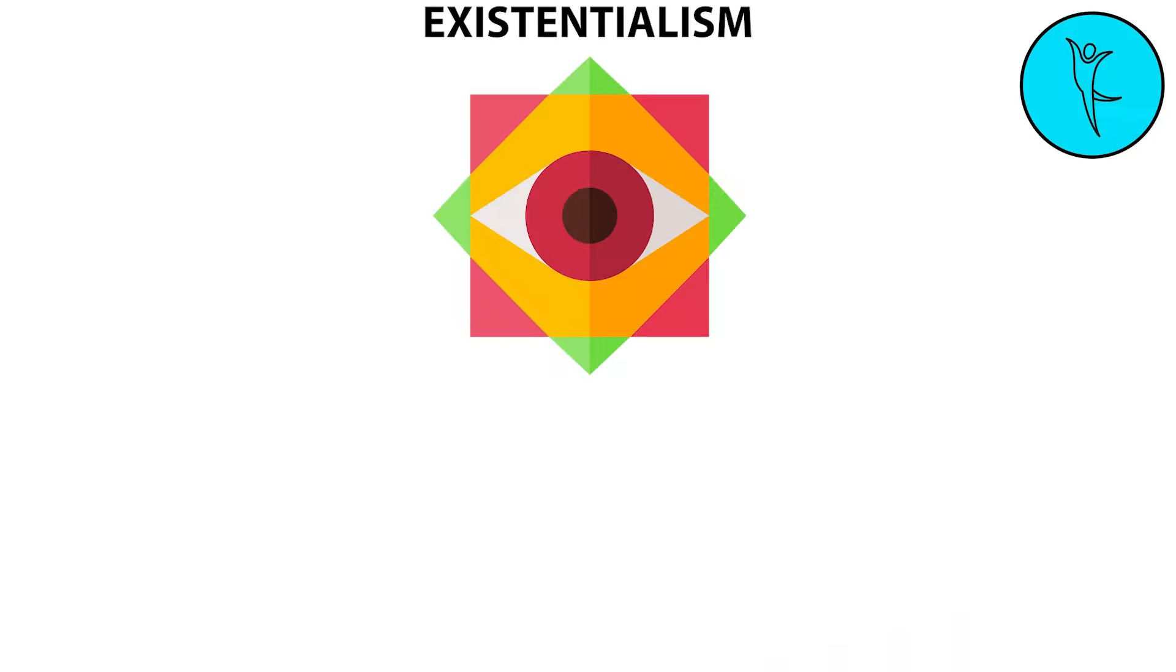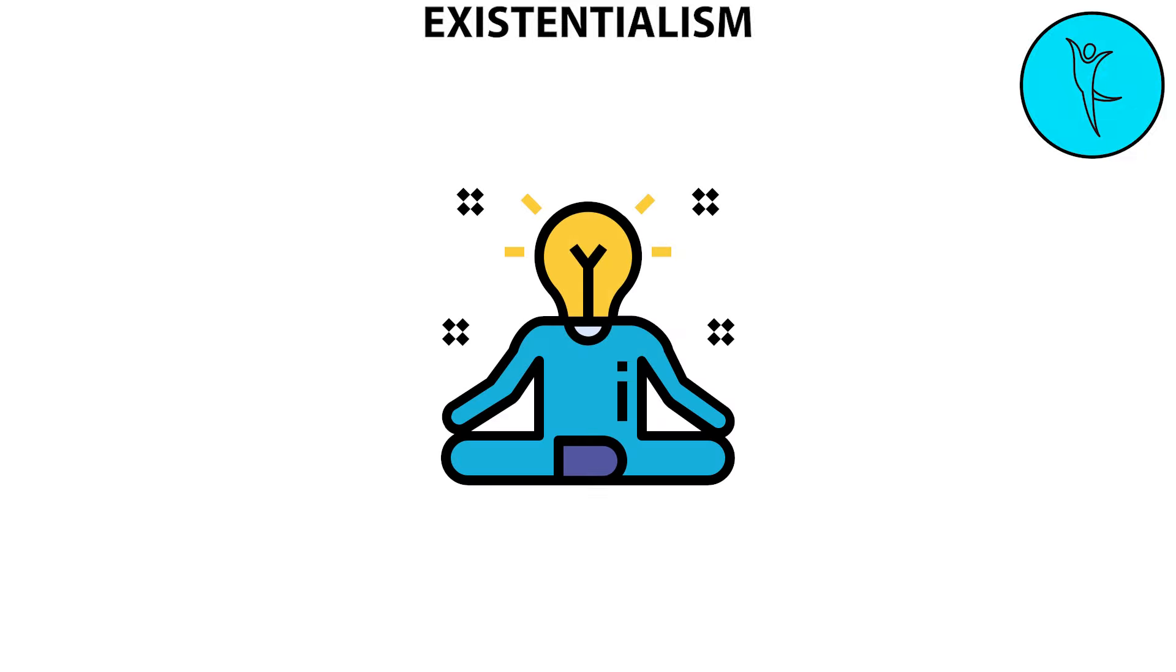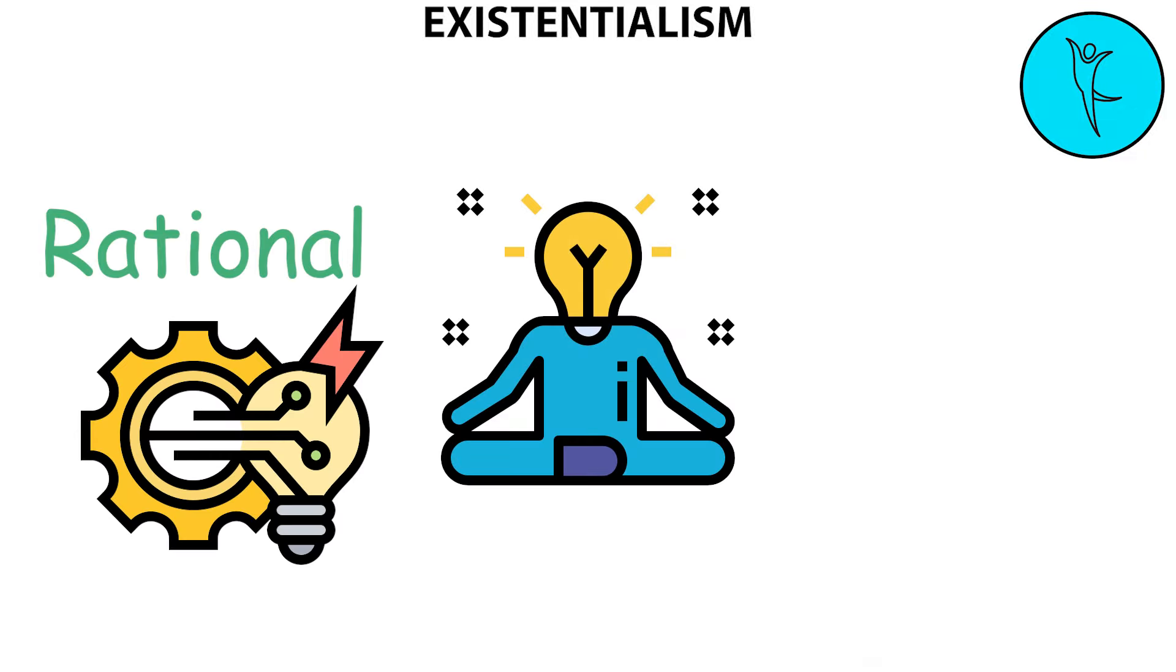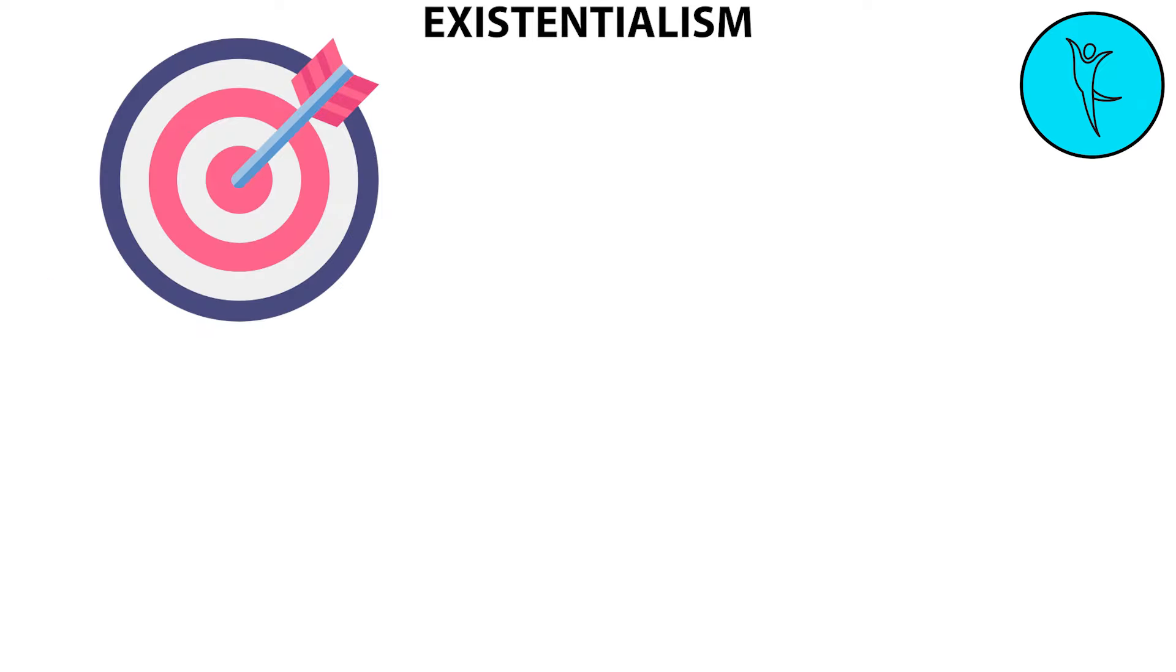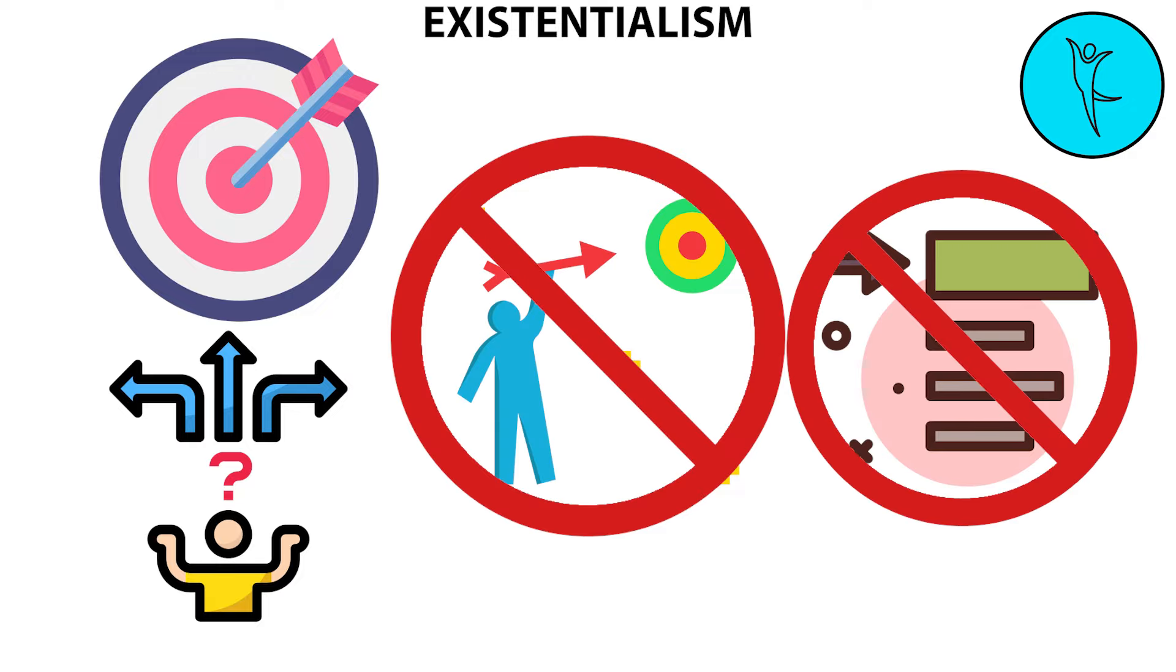Existentialism is a philosophy that emphasizes individual existence, freedom, and choice. It is the view that humans define their own meaning in life and try to make rational decisions despite existing in an irrational universe. It focuses on the question of human existence and the feeling that there is no purpose or explanation at the core of existence.